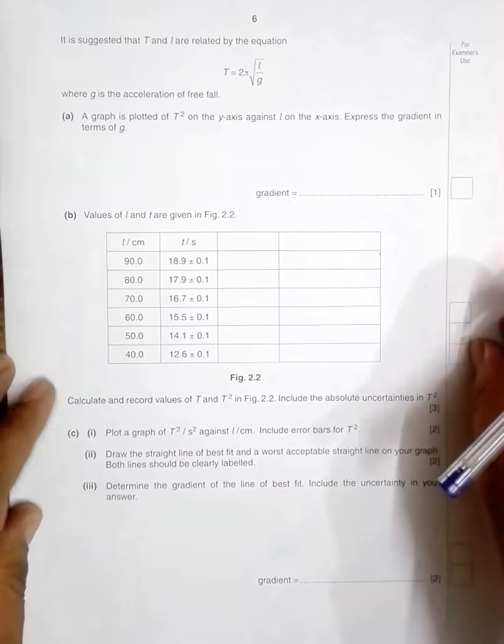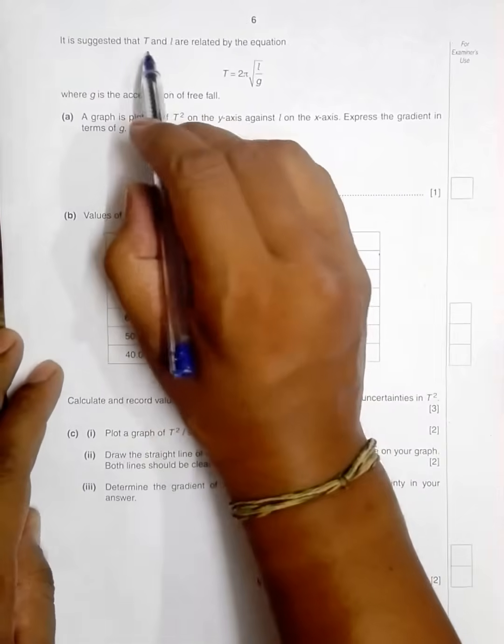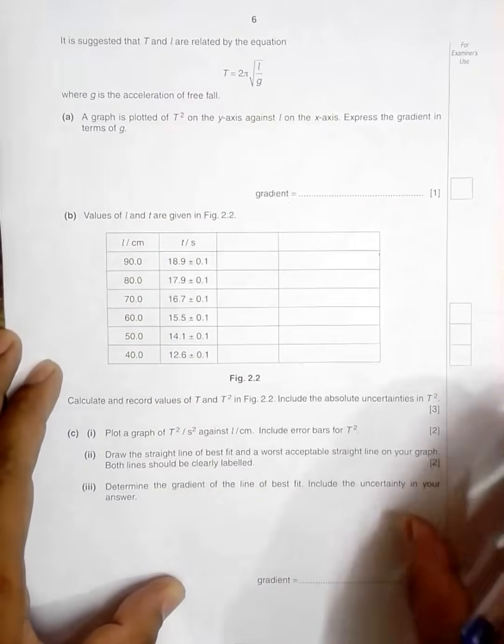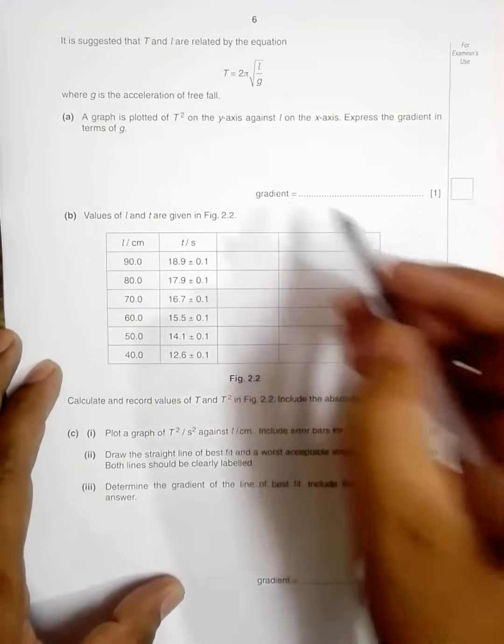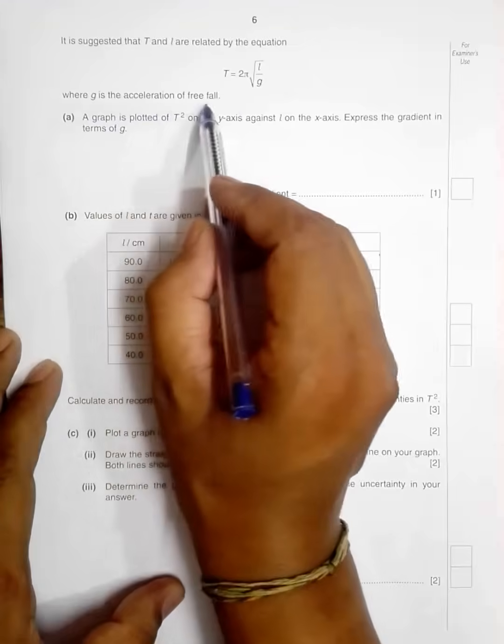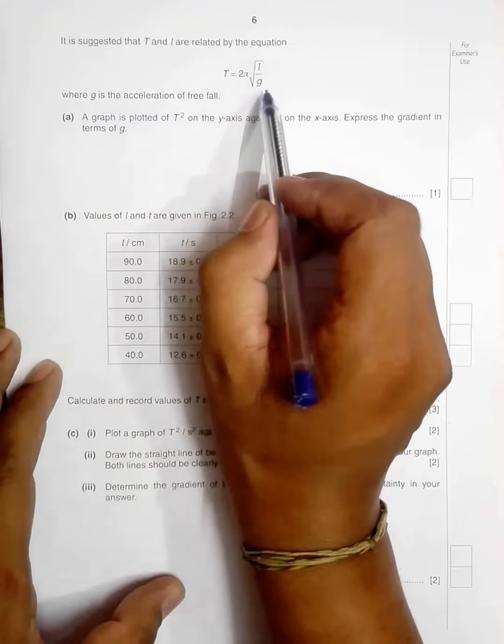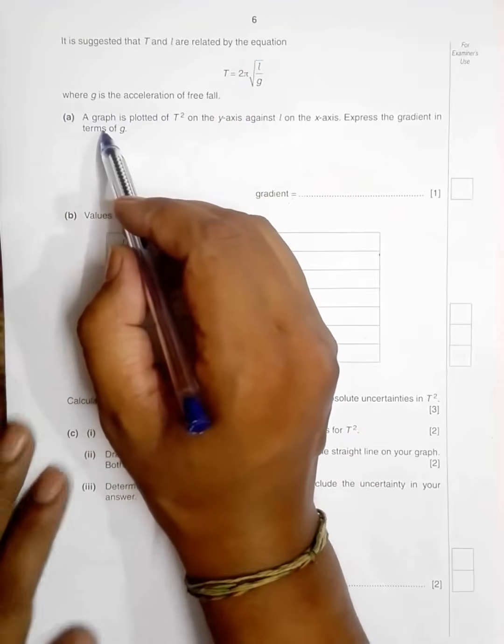It is suggested that T and L are related by the equation T = 2π√(L/g), where g is the acceleration of free fall.